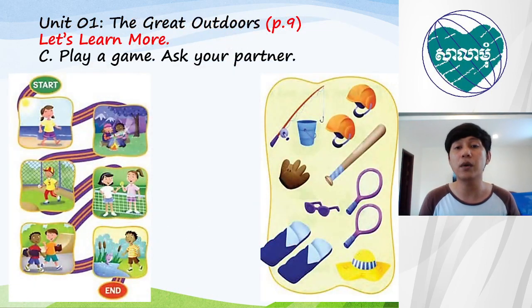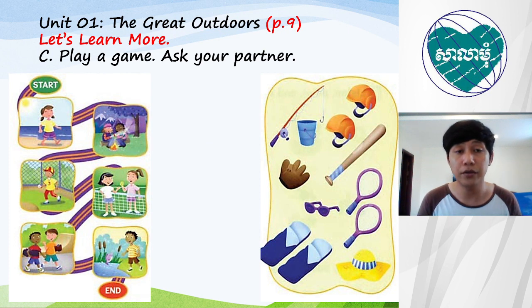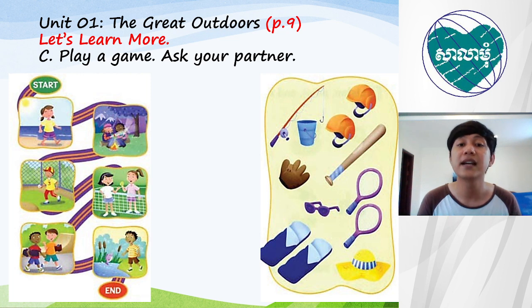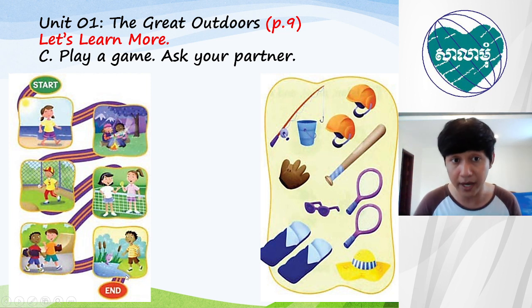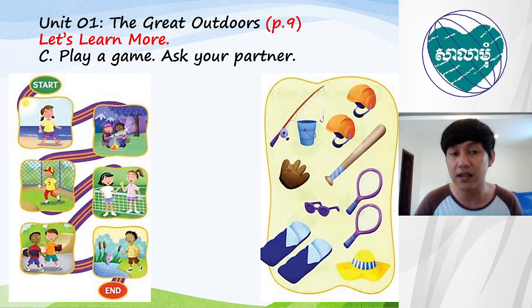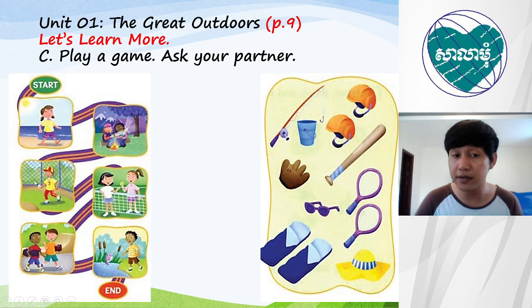Now everyone, open your coursebook altogether on page 9. Unit one, the Great Outdoors. Let's learn more. See, play a game, ask your partner. As you can see, look at this picture — this is the game. Start from this picture and you can see along with the road until at the end. We have different activities with different subjects, and these are the things that you need to answer with all these activities.